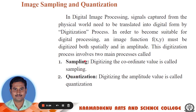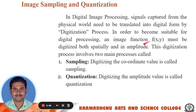Sampling is the process of digitizing the coordinate values. Quantization is the process of digitizing the amplitude values. When an image is called a digital image, it satisfies the function f(x, y), where x and y are the coordinate values of the image, and f(x, y) represents the amplitude values. The image is always represented in a 2D form, where x and y are coordinates and f is the amplitude — that is, the intensity value of the image.